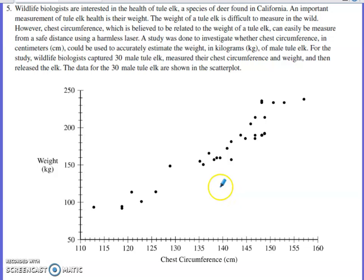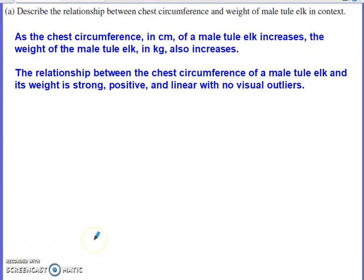With a harmless laser, they're able to make this measurement that we see specified on the x-axis. So they did actually have 30 male tule elk, and they were able to measure their chest circumference. These deer they did capture and weigh. They don't want to have to capture every tule elk in the future to weigh it. They want to be able to measure its chest circumference and hopefully make a prediction about its weight. Part A says, describe the relationship between chest circumference and weight of the male tule elk in context.